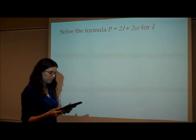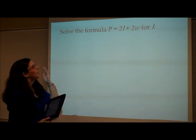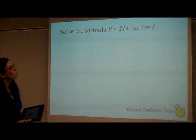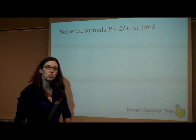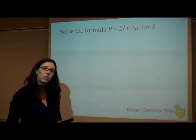Let's look at another one. Now we have our perimeter formula. So the perimeter equals 2 times the length plus 2 times the width, and I want you to solve it for the length.